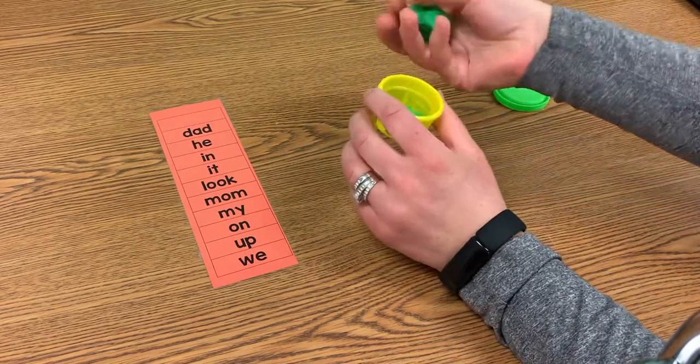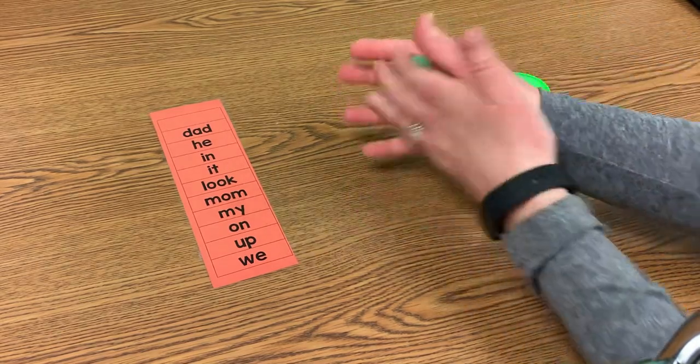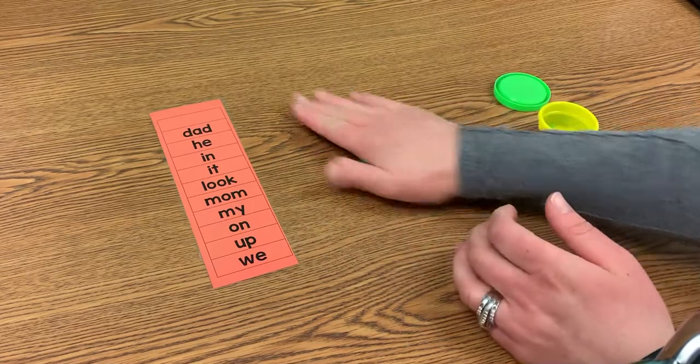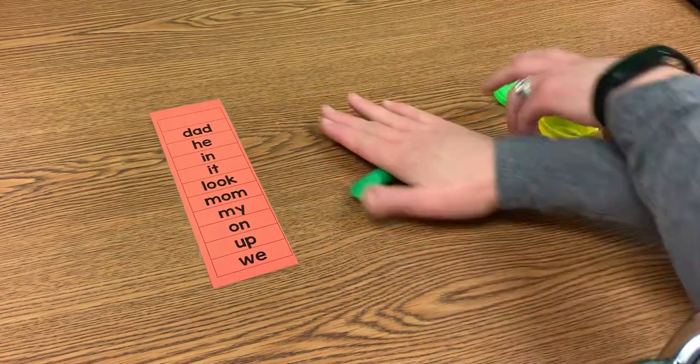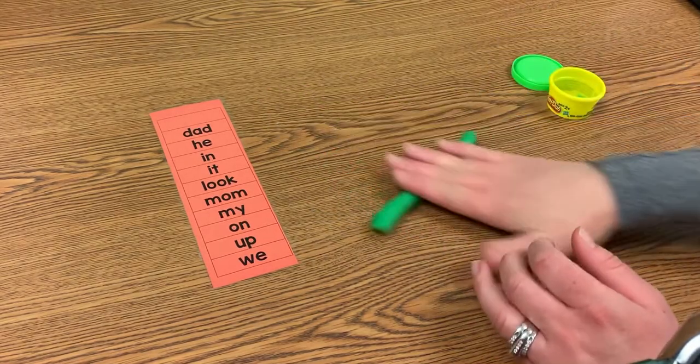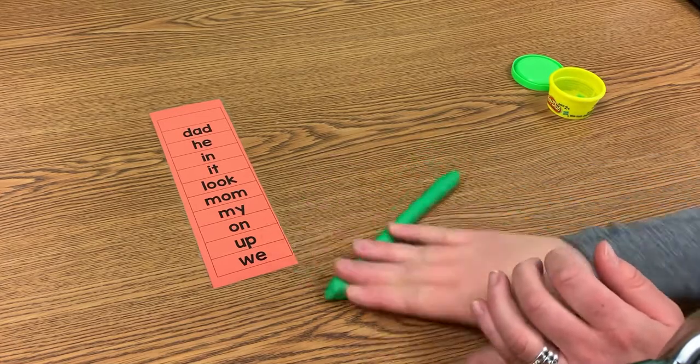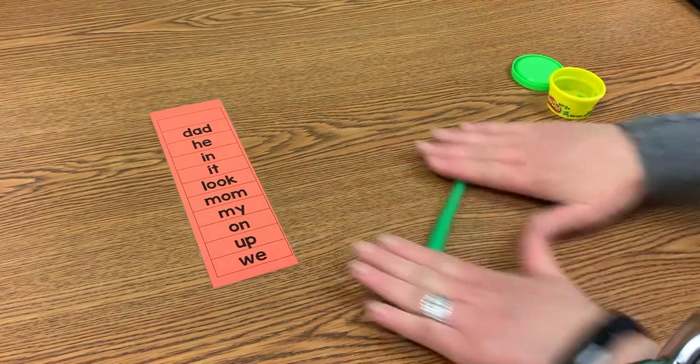First I'll get my Play-Doh out, squish my ball, and roll it into a snake. When I roll it into a snake, it makes it easier to make the letters. So I'm just going to roll it long.